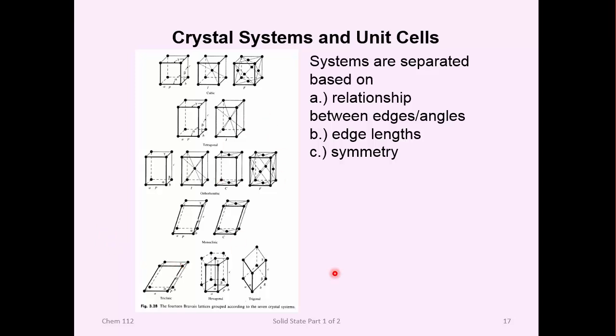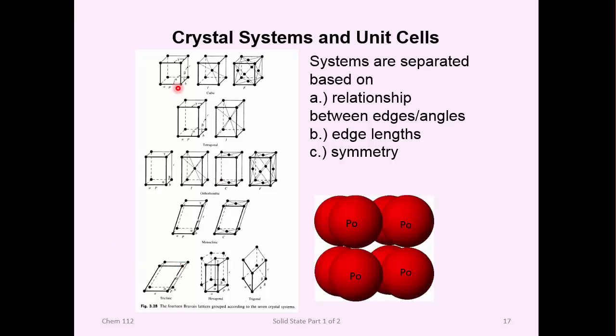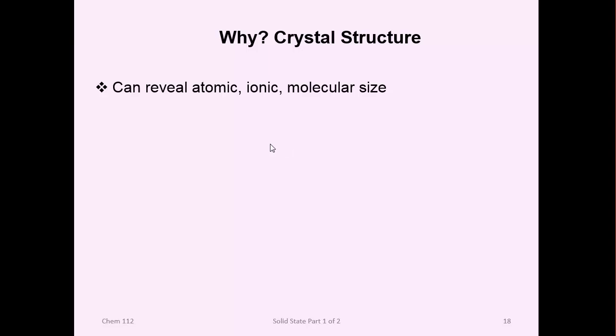Before we do that, I want you to appreciate why we would want a crystal structure. Here's a simple cubic structure, an atom on each corner. If I was to explode that up and look at the atoms, they would be like this. Polonium atoms crystallize in a simple cubic structure. For one thing, they can reveal atomic, ionic, and molecular size. The size of the atom is very important for lattice energy, interim and intermolecular attraction. It gives rise to polarizability and density.